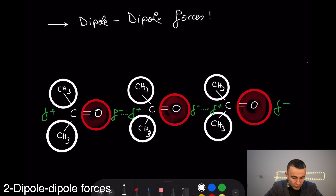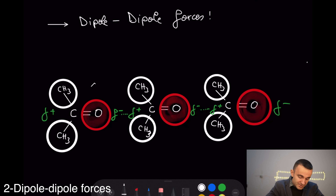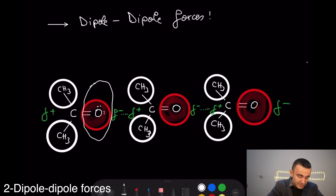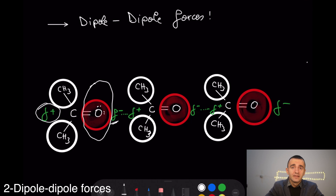Consider the acetone molecule: it has an electron-rich region on the oxygen side, because oxygen is more electronegative than carbon, making that side delta negative, while the other side is delta positive. Molecules arrange themselves to attract each other. All molecules, including polar ones, have dispersion forces, but polar molecules additionally have dipole-dipole forces that are more powerful than dispersion forces.